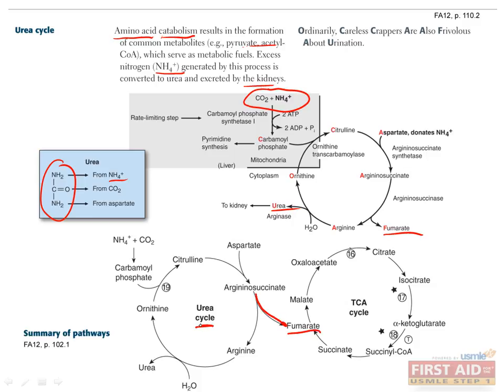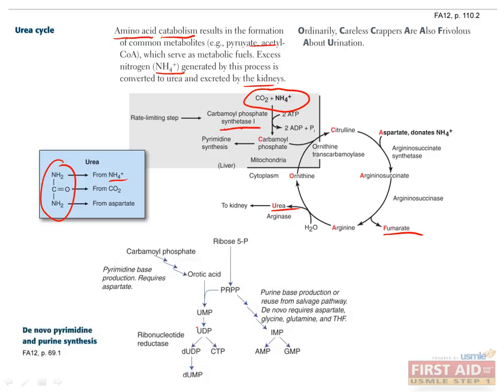It's also important to note that the urea cycle takes place in both the mitochondria and the cytoplasm. The rate-limiting step is the first one, which is catalyzed by carbamoyl phosphate synthetase-1. This enzyme converts carbon dioxide and ammonium to carbamoyl phosphate. This may sound familiar, since I talked about it at the beginning of the biochemistry chapter. Carbamoyl phosphate synthetase-2 creates carbamoyl phosphate in pyrimidine synthesis.